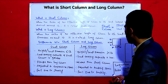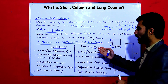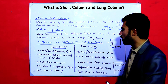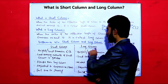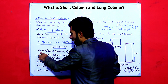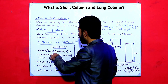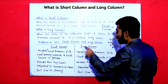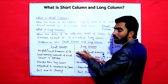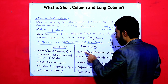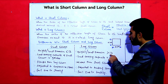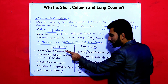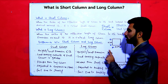Now let's look at the main differences. The first difference: for a short column, the height divided by the least lateral dimension is less than 12. For a long column, the height divided by the least lateral dimension is more than 12. I will also give you an example when we discuss the differences.